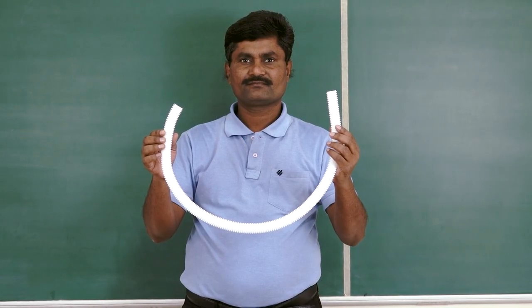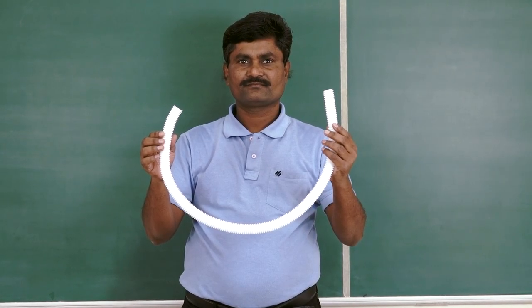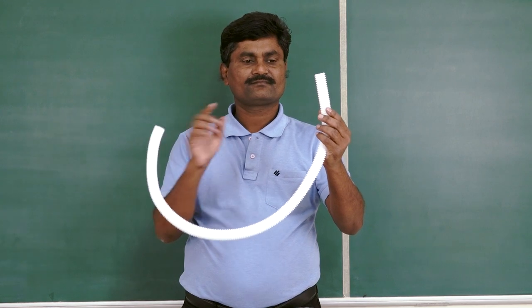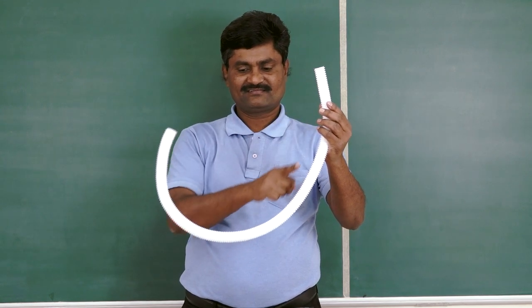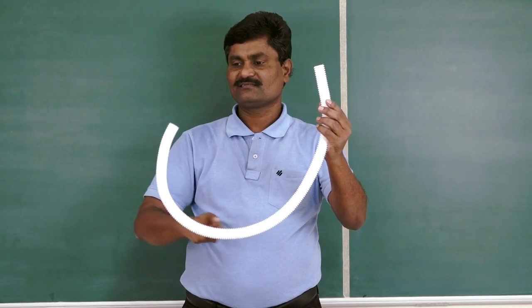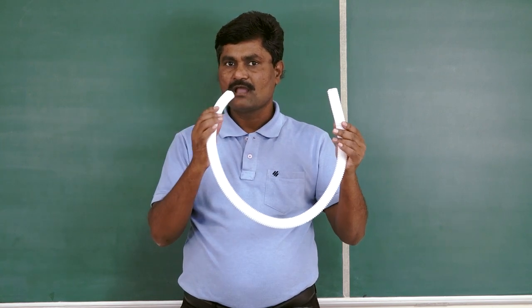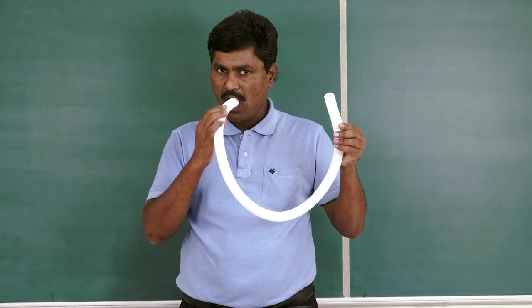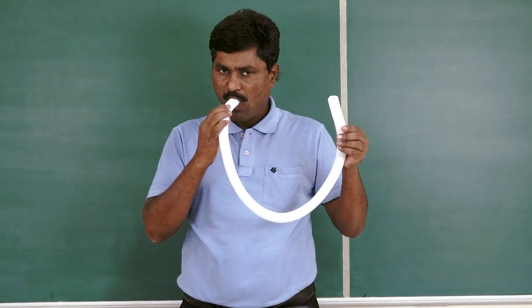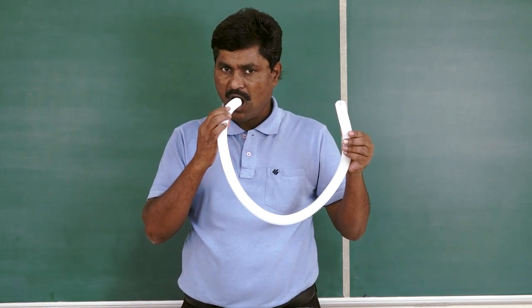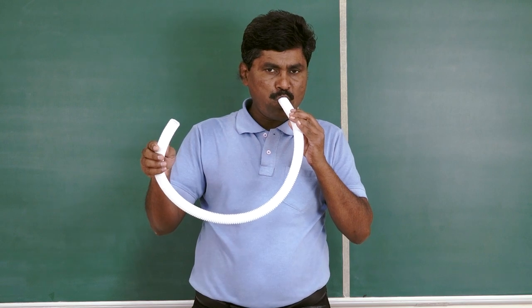Next, you can demonstrate the singing pipe activity. For this, you just need a one-meter corrugated pipe. This activity will show that frequency depends on the length of the air column inside the pipe. You can also discuss with your students what will happen if you use a plain pipe instead of a corrugated one.